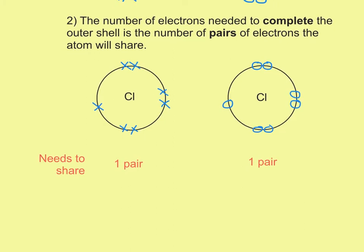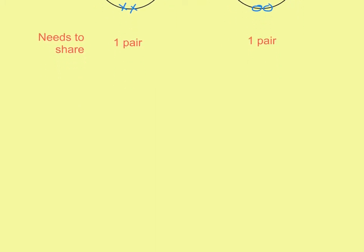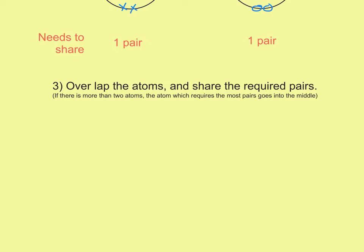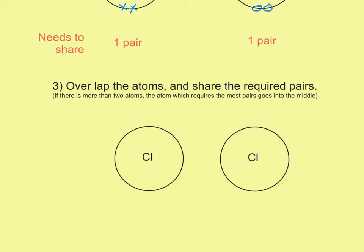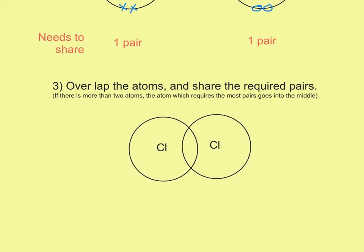Now we identify that both atoms need to share one pair, so we move on to step three. Step three says we overlap the atoms and share the required pairs. There's a side note that if there are more than two atoms, the atom which requires the most pairs goes into the middle. In this case we don't have more than two atoms, so we can ignore that. We overlap them much like a Venn diagram, and add in the required pair — remember a pair is two, so that's a dot and a cross.